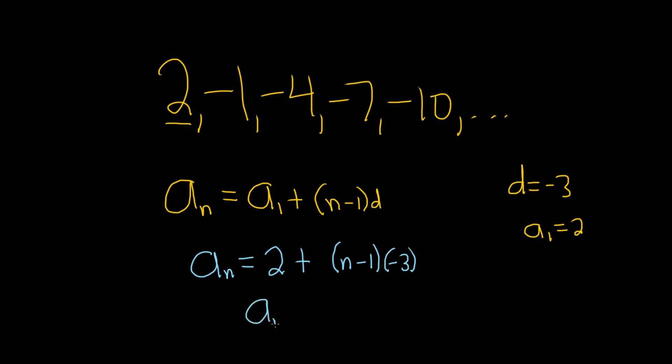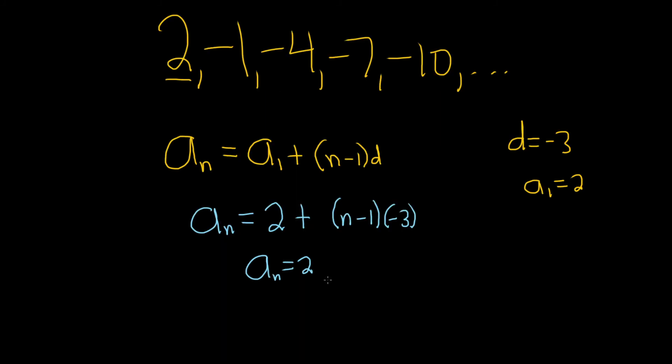So a sub n is equal to 2. And now we'll just take the negative 3 and distribute it. So minus 3n, and then this times this would be plus 3.